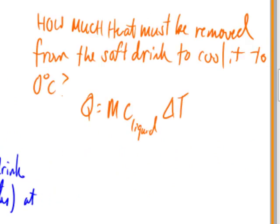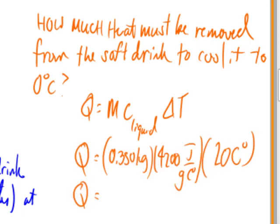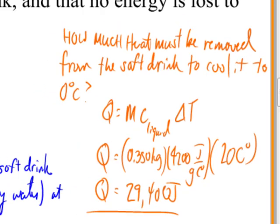The mass of 350 milliliters of the liquid, if the density is 1 gram per milliliter, is going to be 350 grams. That comes from the density formula. The C is going to be the specific heat of the liquid, and the delta T is going to be 20 degrees — I end at 0, I start at 20, so the delta T in magnitude is going to be 20 degrees. If I were to cool this liquid from 20 down to 0, it would require the removal of 29,000 joules of energy.